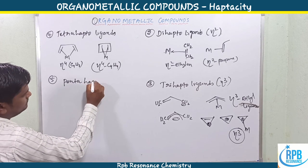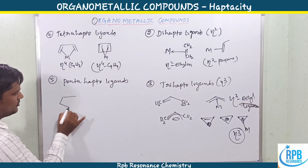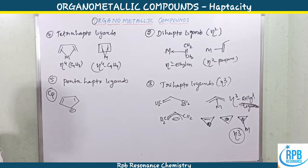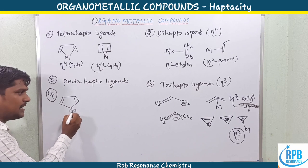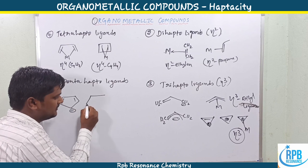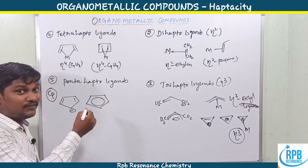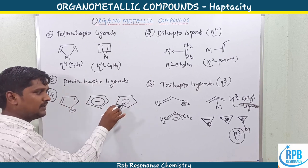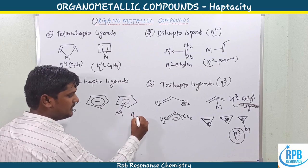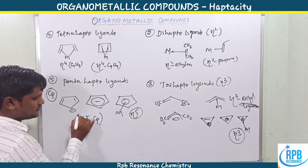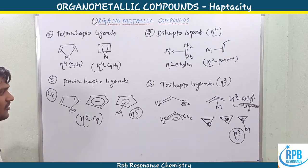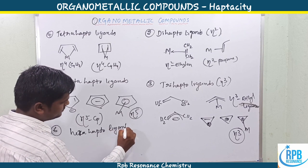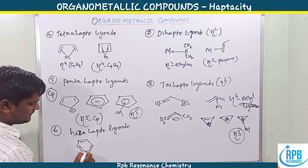Pentahapto ligands (η5): the best and only example is the cyclopentadienyl anion (Cp⁻). The carbanion delocalizes across five carbon atoms. All five carbon atoms are connected to the metal atom, making it an η5 complex - simply written as η5-Cp (cyclopentadienyl anion).